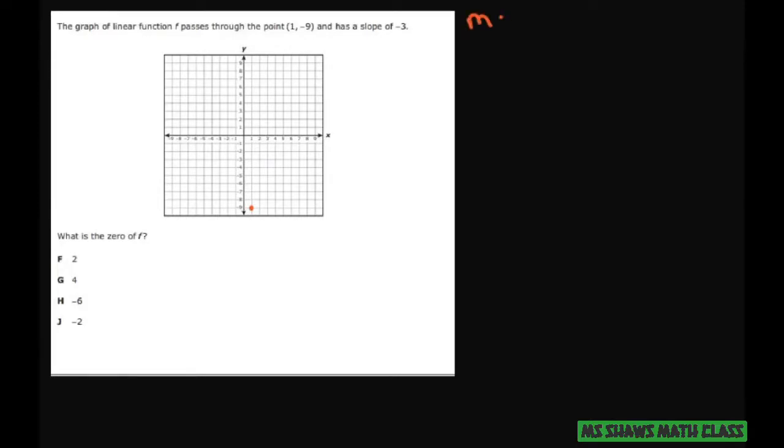So the slope is -3, and you can write that as -3 divided by 1, or 3 divided by -1. That's what I'm going to use.